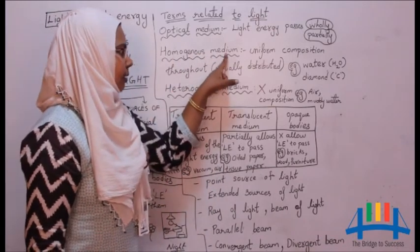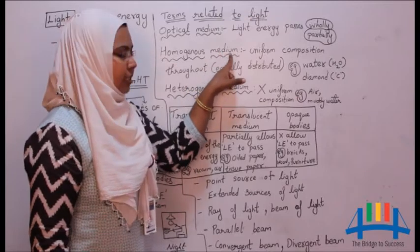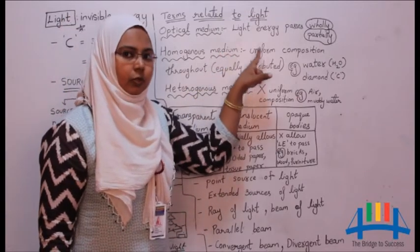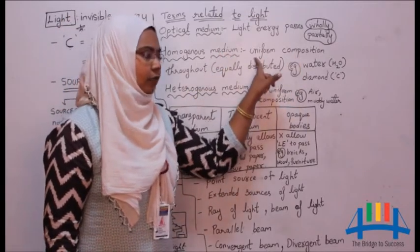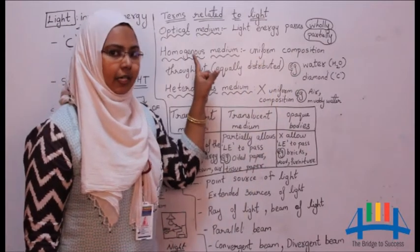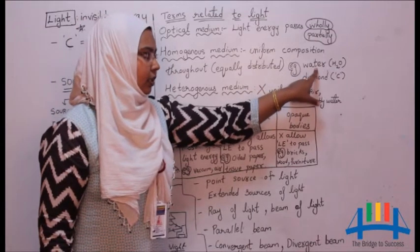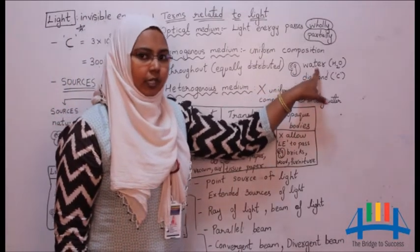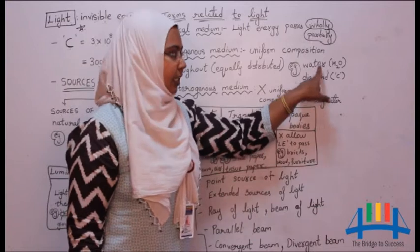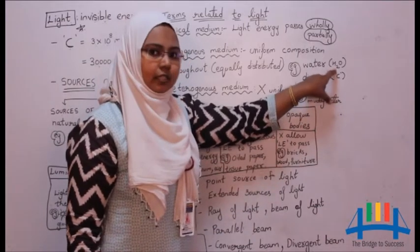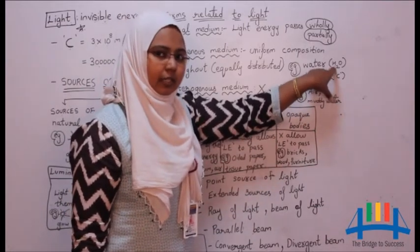Homogeneous medium is an optical medium which has uniform composition. Uniform composition means all the particles are equally distributed. Example: in water, the water is made up of only one kind of molecule, that is H2O. These molecules are equally distributed.